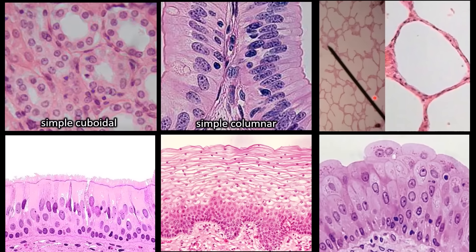In the next slide, you're seeing the same type of epithelium at two different magnifications. At high magnification, you can see one layer of flat cells. So this is simple squamous.